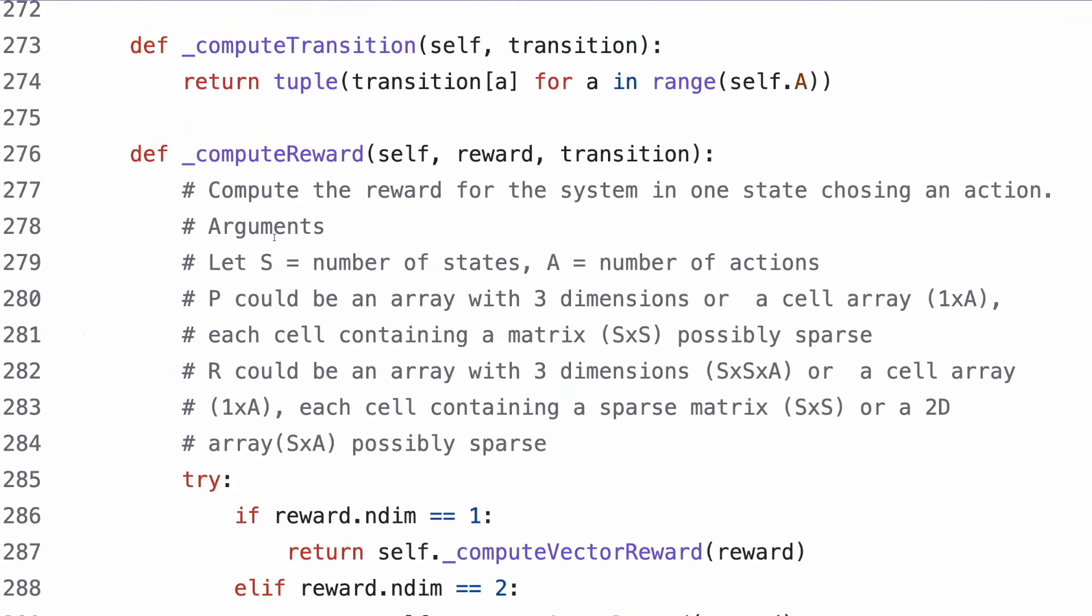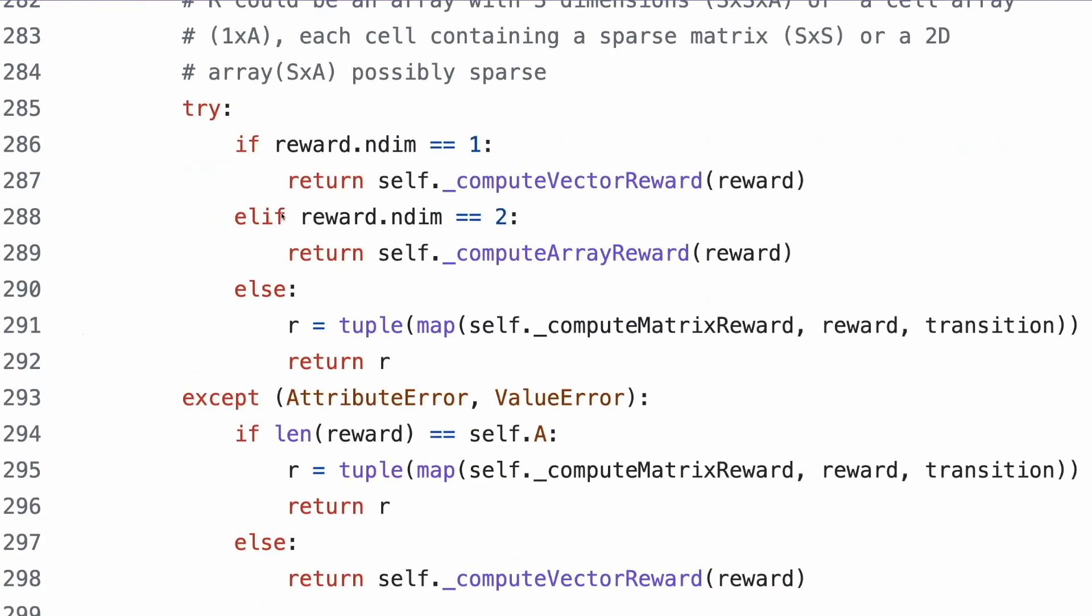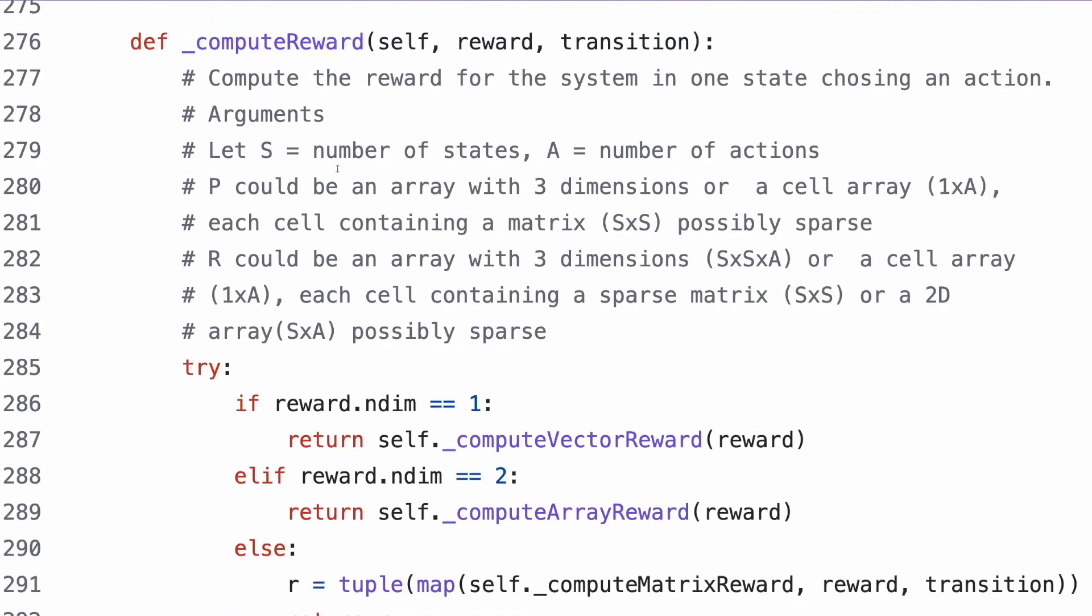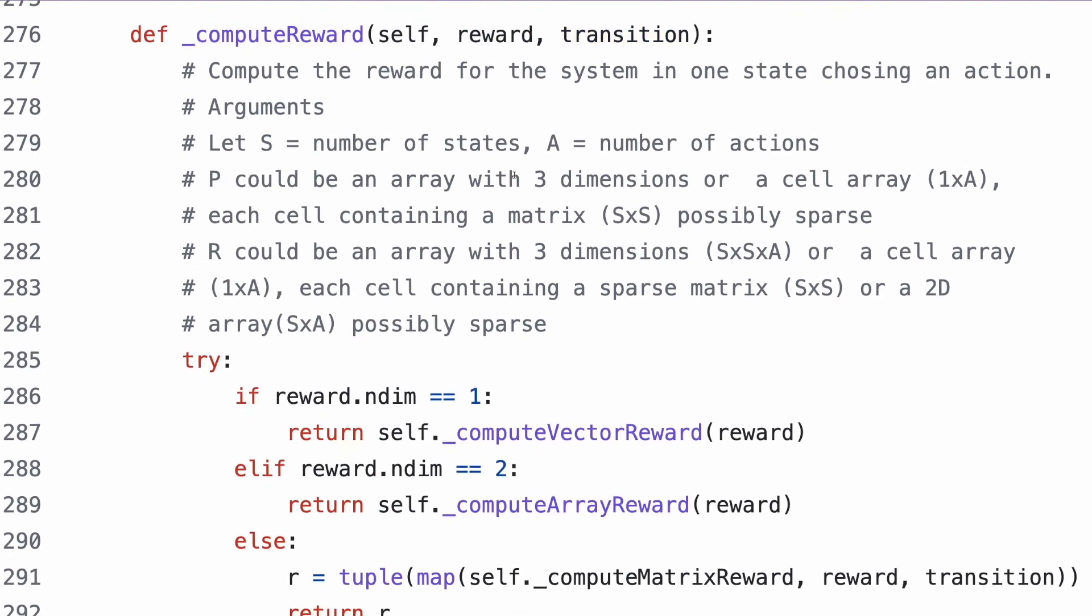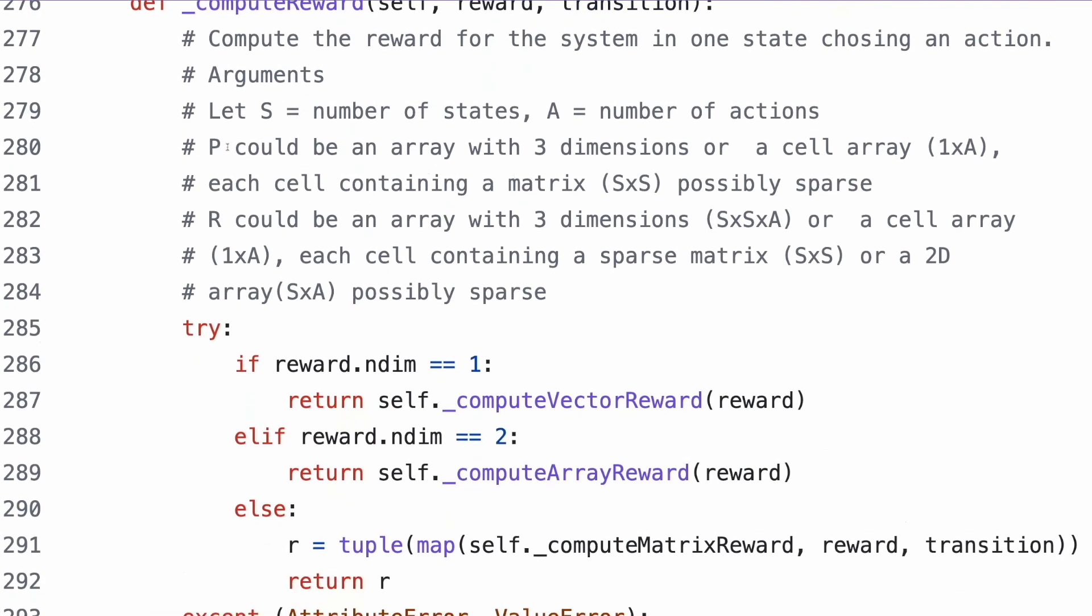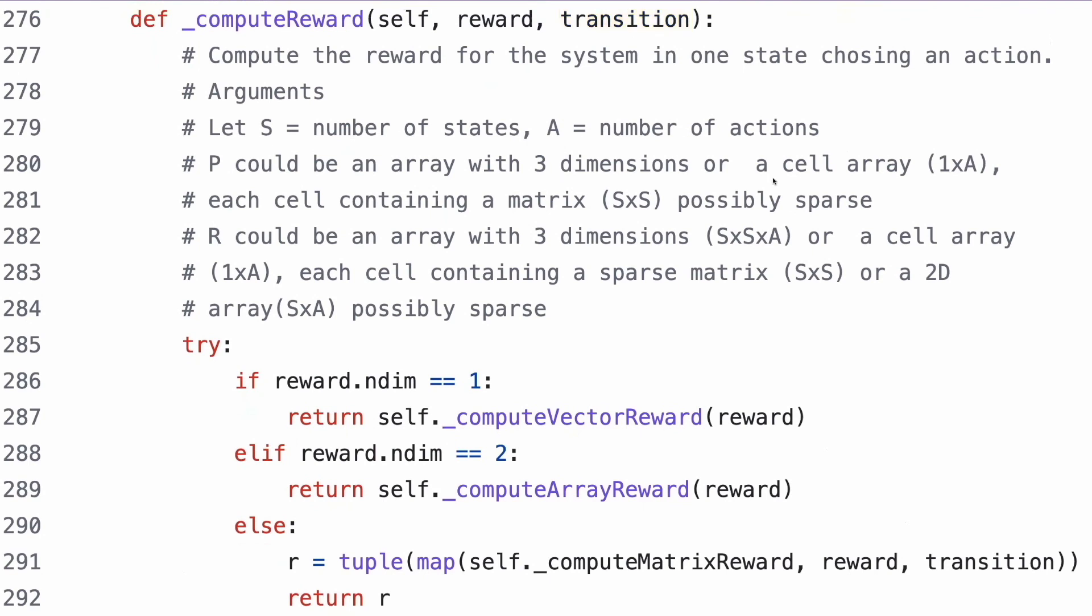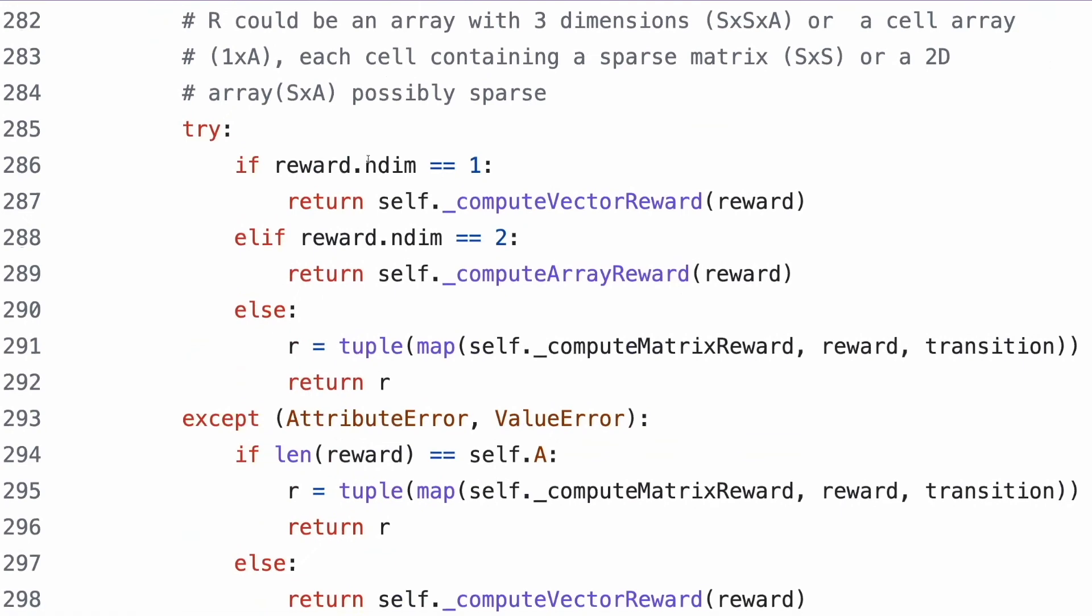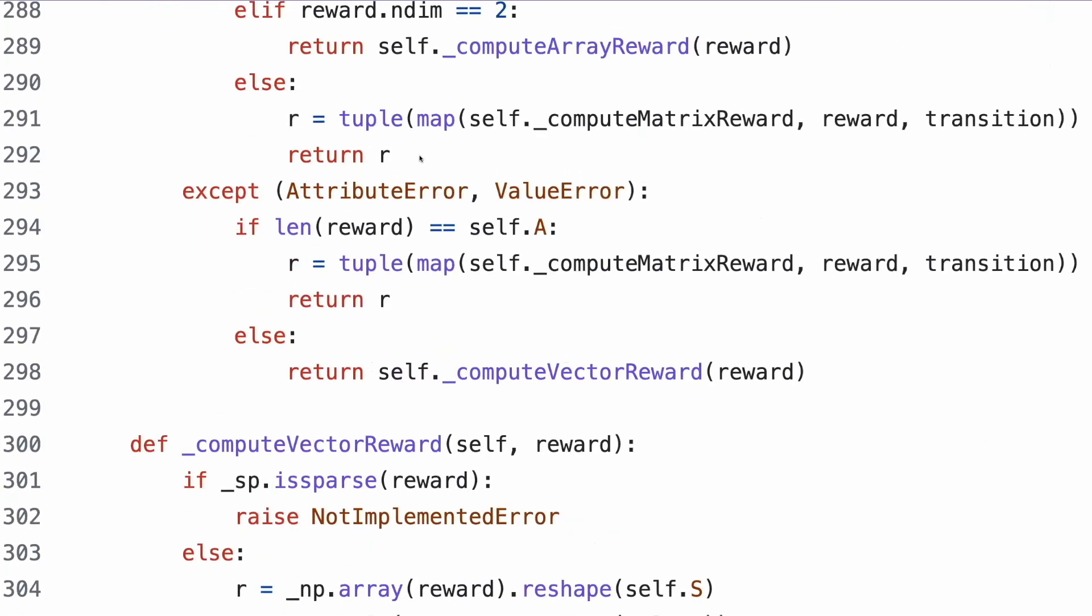There is a function to compute a reward. Reward, as I told you earlier, is evaluation of actions for one state, choosing some particular action. Also taking into account stochasticity during transition. So S will be a number of states, A number of actions. P is an array of transitions with three dimensions, and each cell is containing a matrix S by S. It helps us to take into account stochasticity.